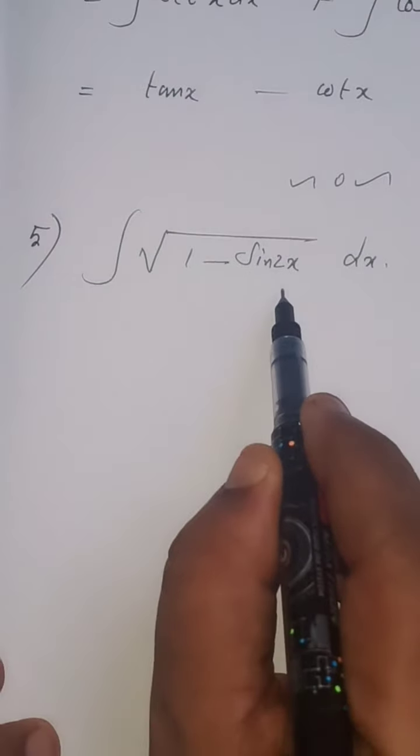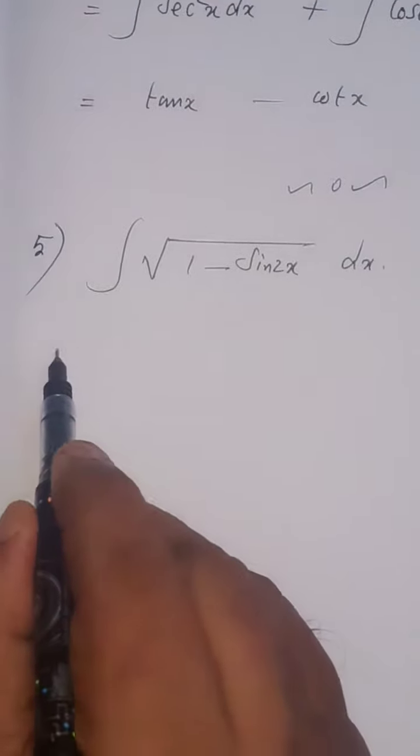The integral is square root of 1 minus sin 2x dx. There is no direct form integration here.